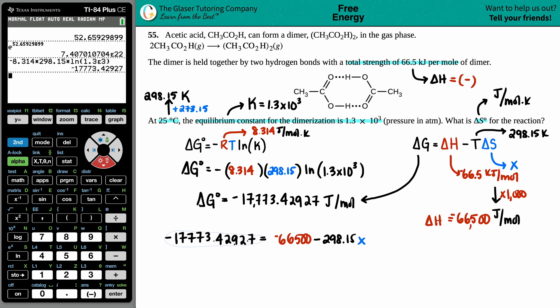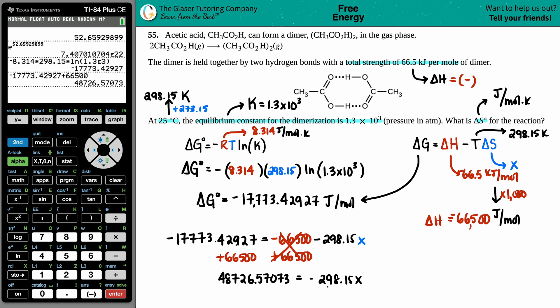Did anybody catch that? Good thing, right? But there we go - we always catch our mistakes and then we're ready to proceed. So now let's get rid of this, so I'm going to plus 66,500 on both sides. So I'm going to take the value that I have and I'm going to plus 66,500. I am not going to round because that's not the final answer. So 48,726.57073 equals -298.15 times by x. All we got to do is just divide by the temperature, negative 298.15. This goes bye-bye.